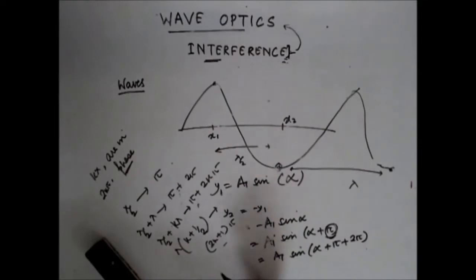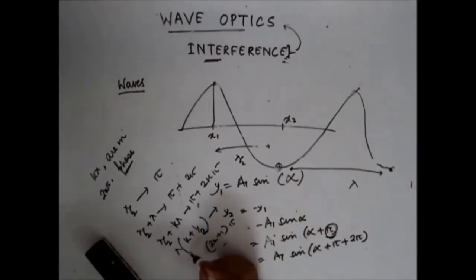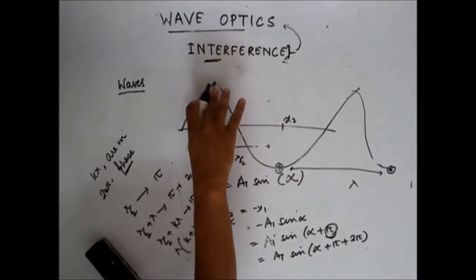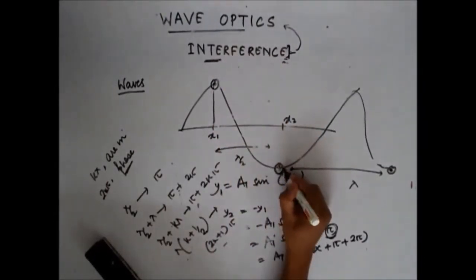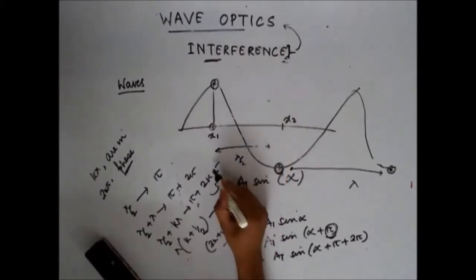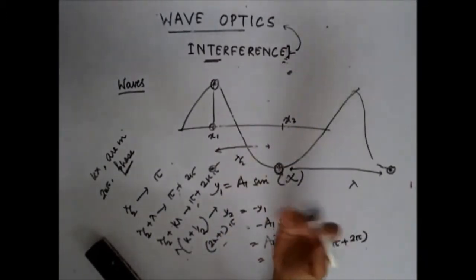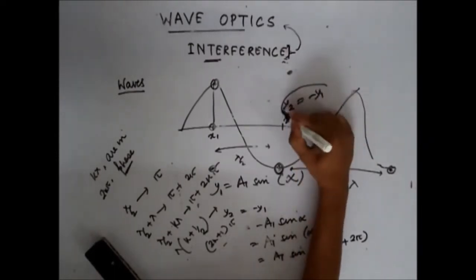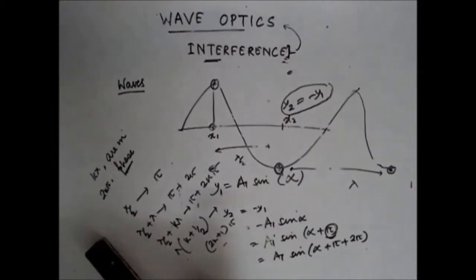So for any position x, if I take points at a distance of λ(k + ½) away, I get points which are completely out of phase. When I say completely out of phase, I mean: when the particle at x1 is at its maximum, the other is at its minimum; when this is at its minimum, that is at its maximum; and when this is zero, that is also zero. So basically, the displacement y2 = -y1. This is what we call particles at two points being out of phase.